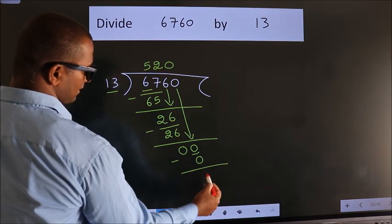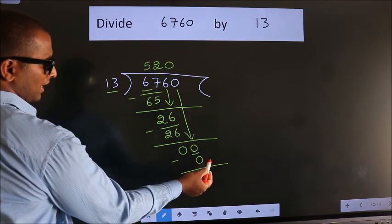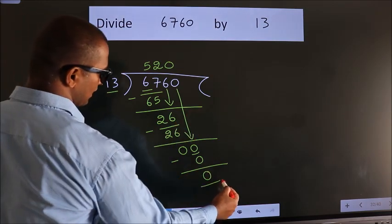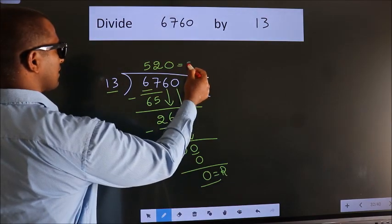Now we subtract. We get 0. No more numbers to bring down. So we stop here. This is our remainder. This is our quotient.